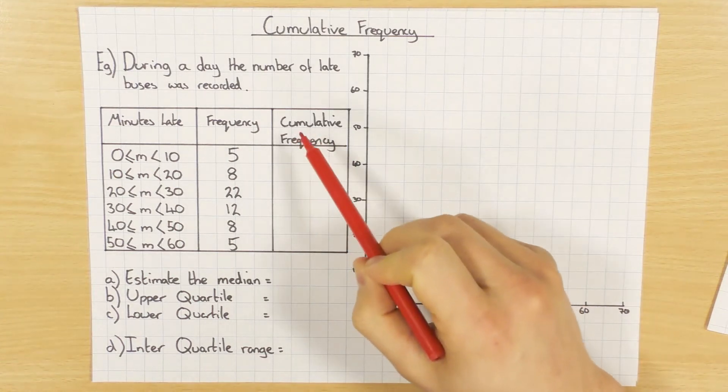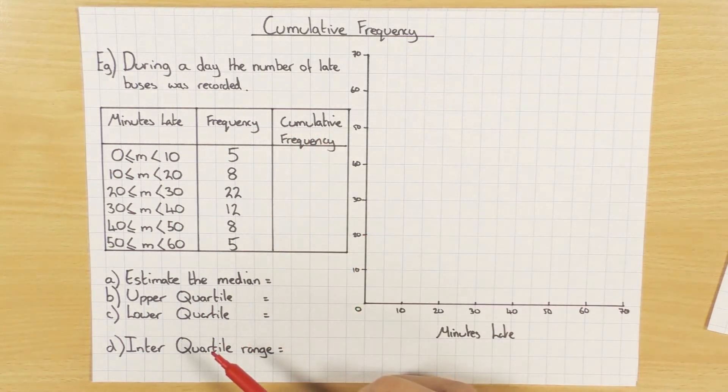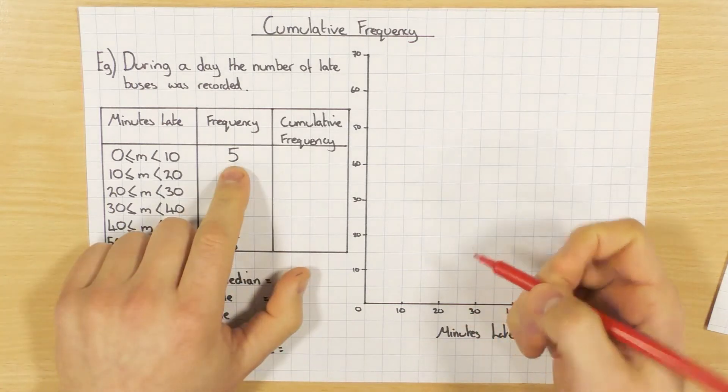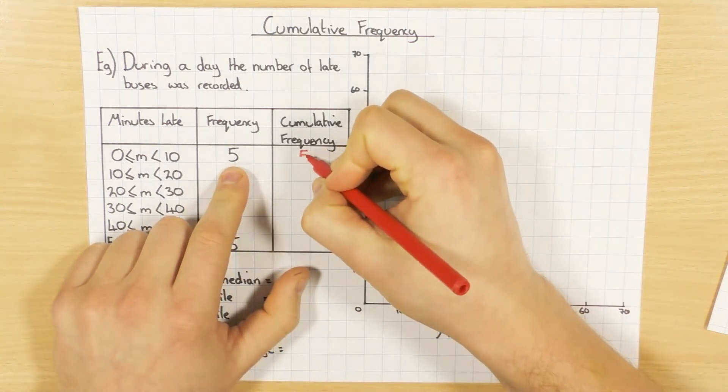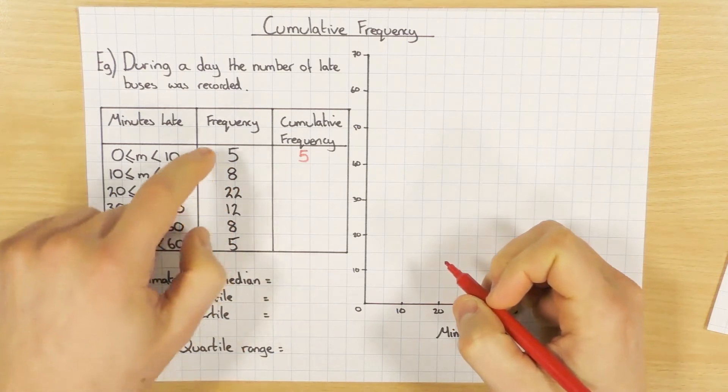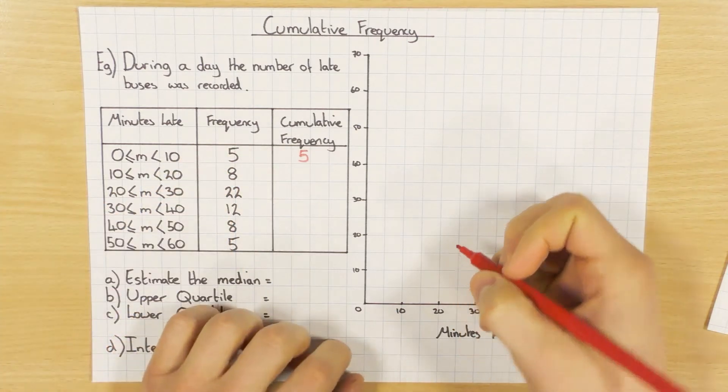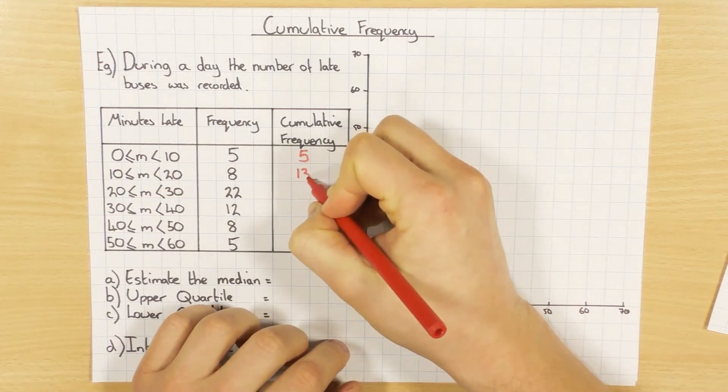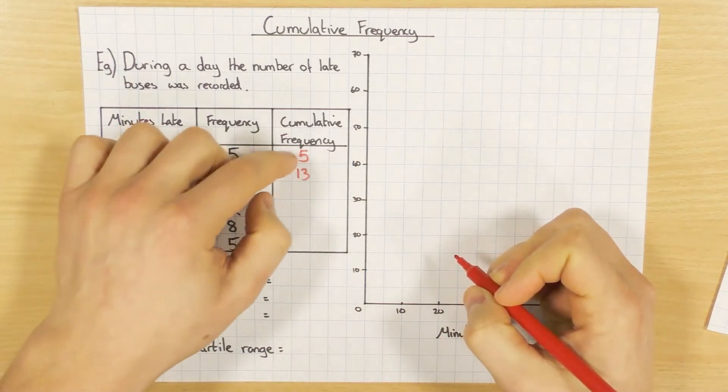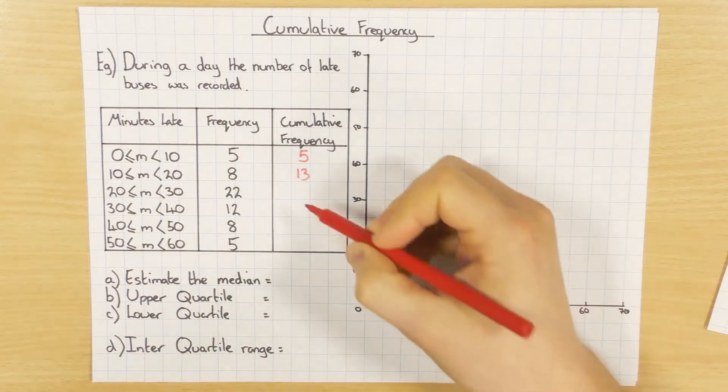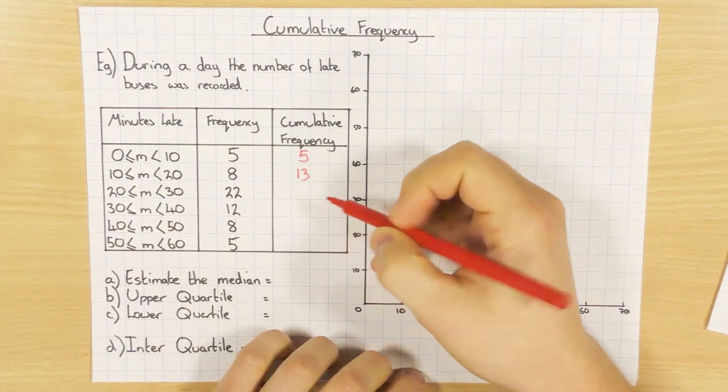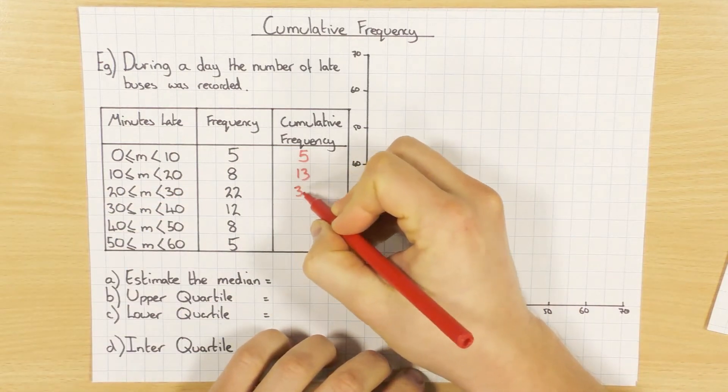So cumulative frequency, as I said, the cumulative bit just means it's a running total. So all I do is the first one is 5, and then the second one will be 5 add 8, which will be 13. So as you can see I just add the two together to get the running total, and the next one, 5 add 8 add 22, that'll give me 35.